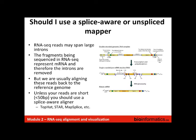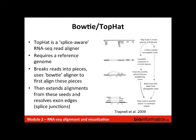Examples of splice-aware aligners include TopHat and STAR, which we'll try in this course, as well as MapSplice, SpliceMap, and others on the figure. TopHat is actually a wrapper for Bowtie, which is not a splice-aware aligner — TopHat takes Bowtie alignments and makes them splice-aware. It requires a reference genome, breaks reads into little pieces, uses Bowtie to align those pieces, and then extends alignments from seeds and resolves exon edges or splice junctions. The TopHat paper from 2009 goes into great detail.